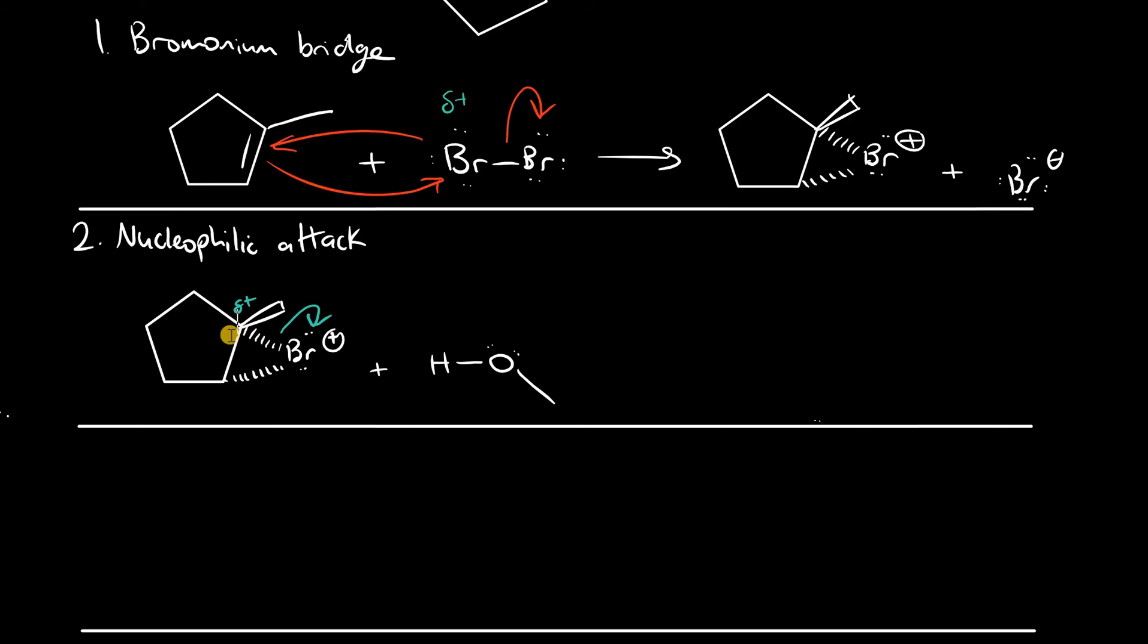If that happens, in the transition state, a partial positive charge should accumulate on this carbon right here. And because of that, it's far more stable than if we had a positive charge accumulating on this secondary carbon. That's the principle behind carbocation stability. Tertiary carbocations are more stable than secondary.